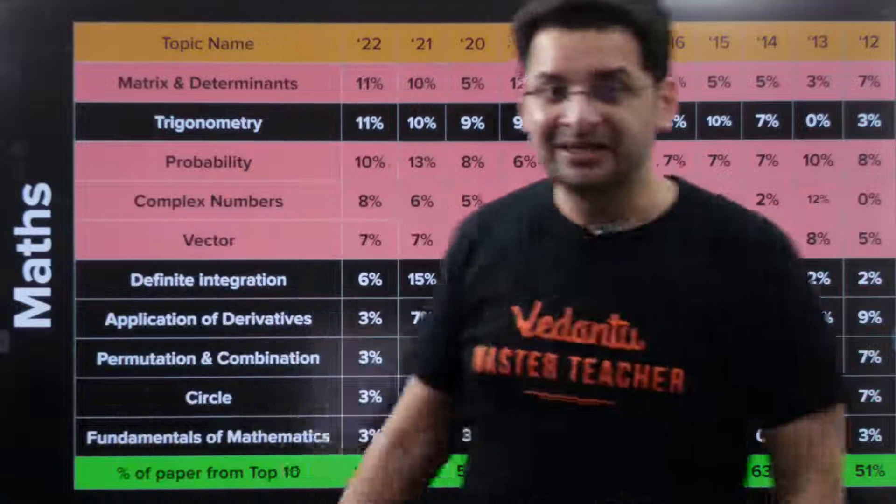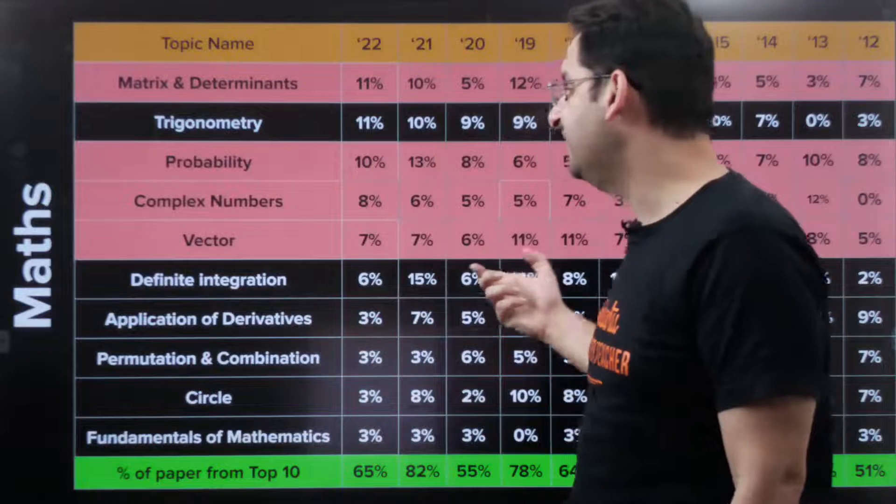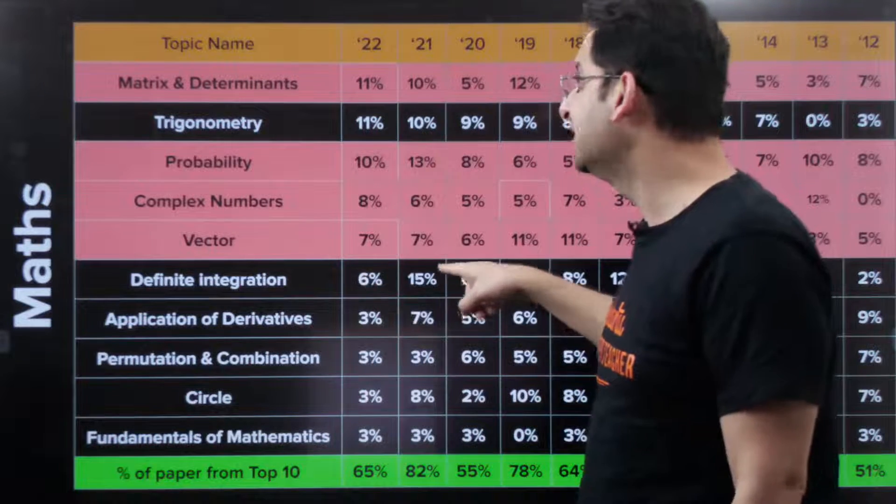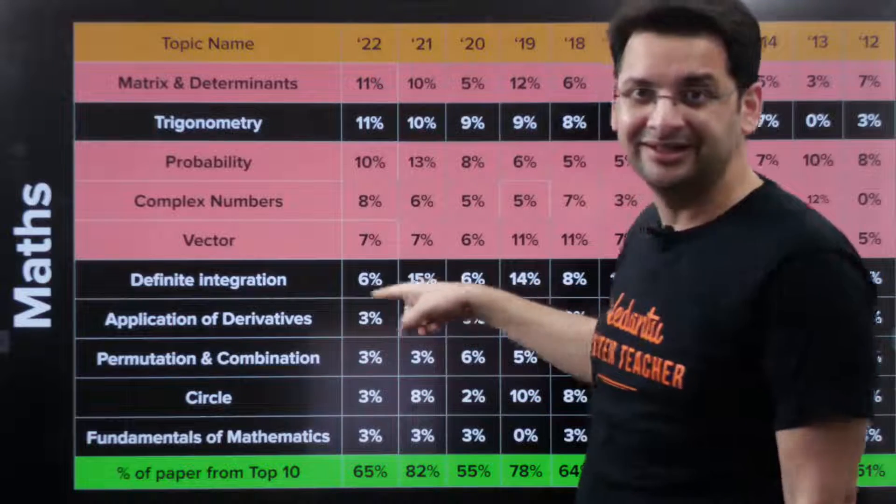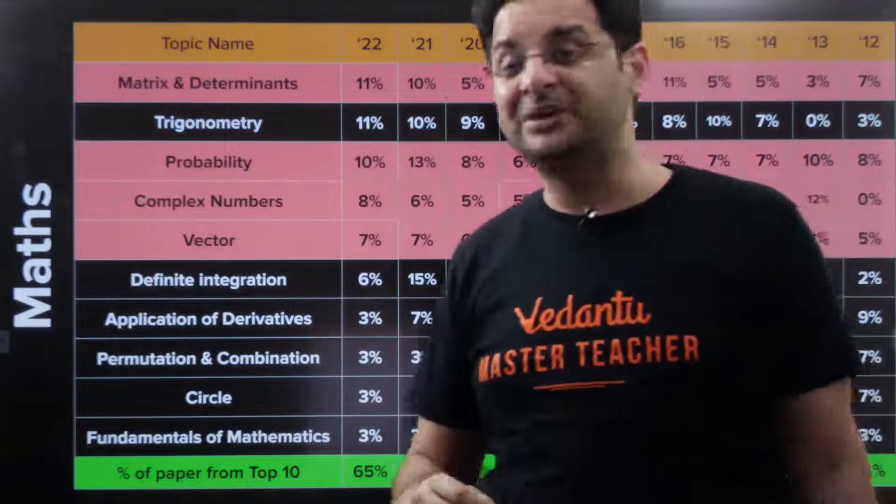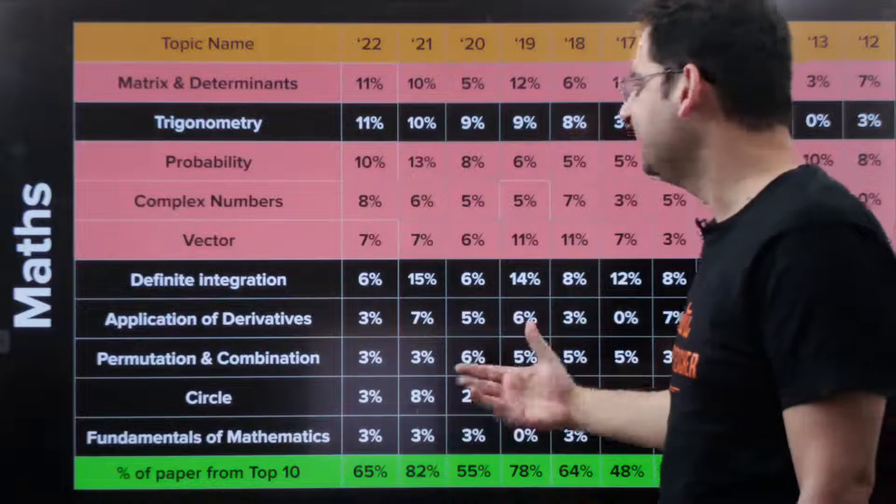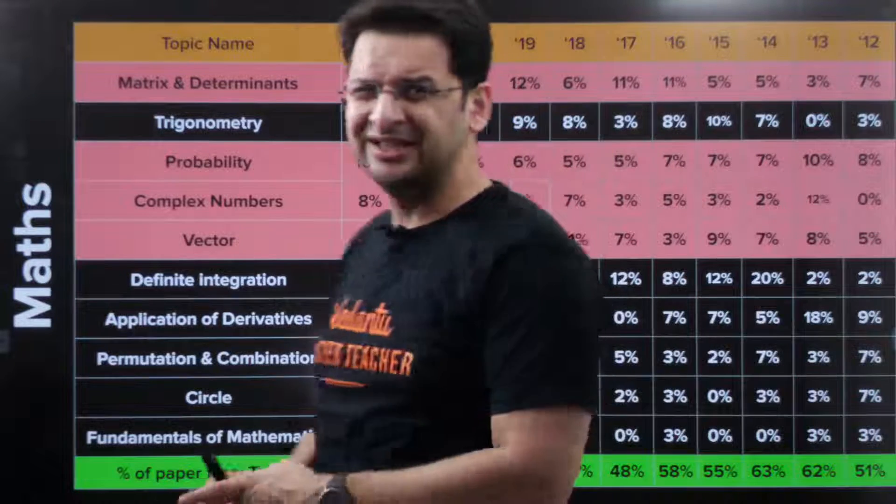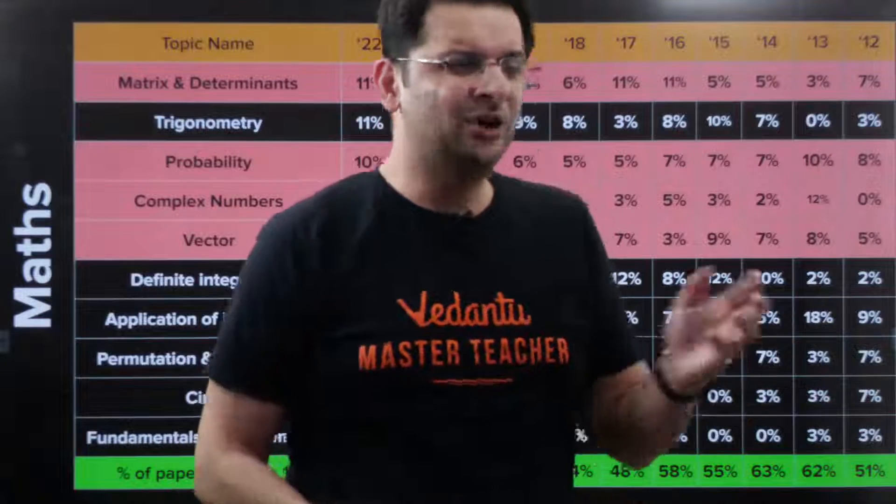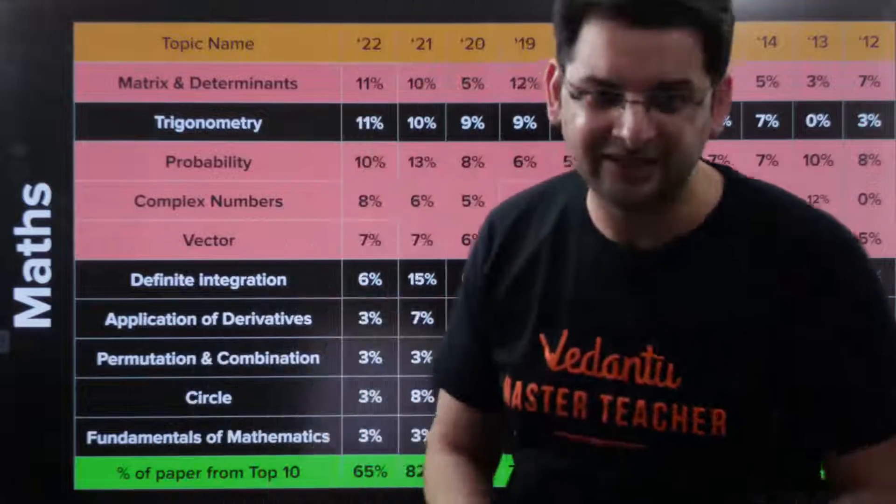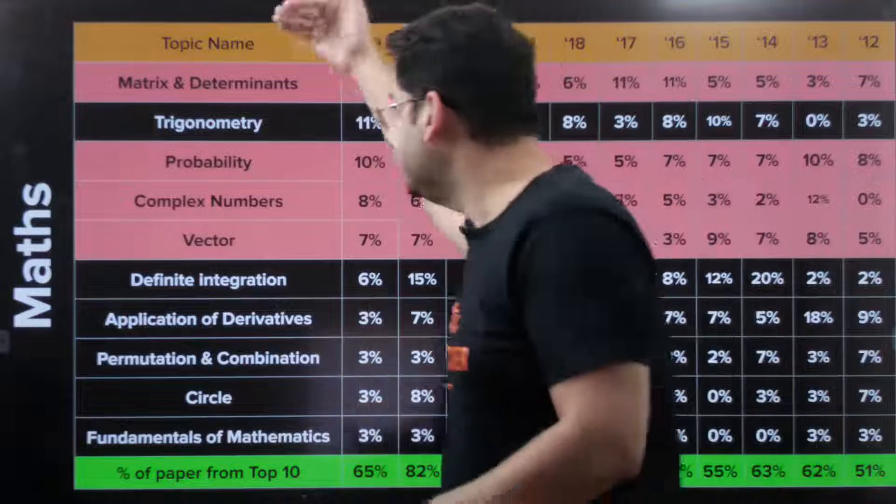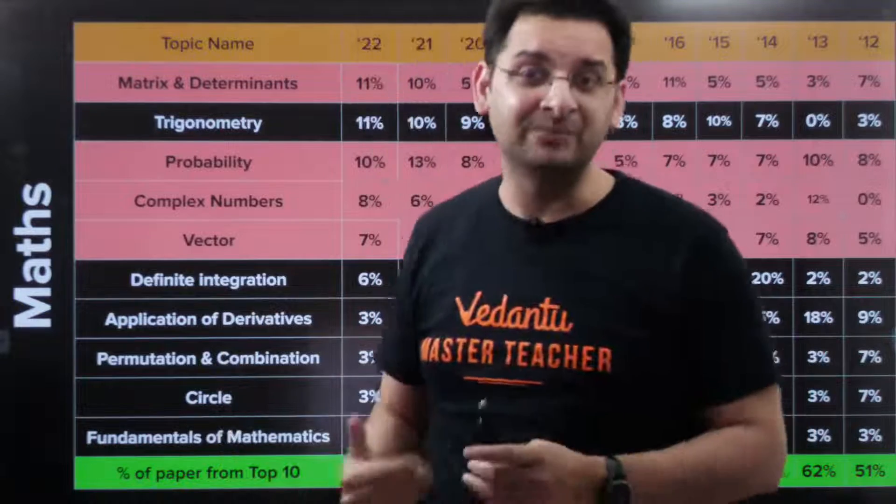If we talk about definite integration, in integral calculus, definite integration is something which has very high weightage. 6 percent, last to last year it was 15 percent. 15 percent question from definite integration. AOD, permutation combination, circles, and fundamentals of mathematics are general questions on mathematics which are not typically from any lecture but apply logic.